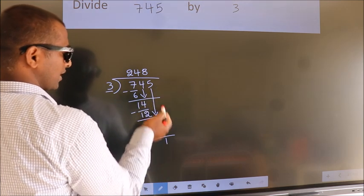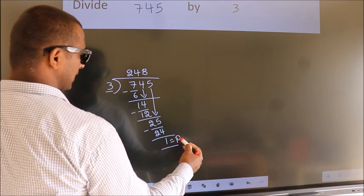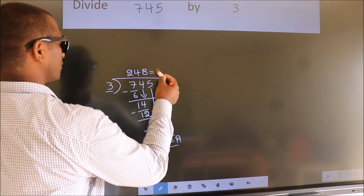No more numbers to bring it down. So we stop here. This is our remainder. This is our quotient.